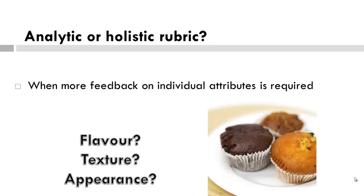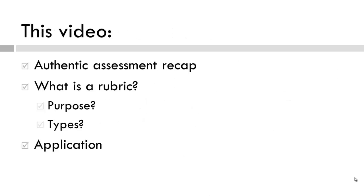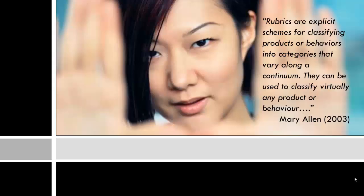For example, if you are analyzing muffins with a rubric that might examine flavor, texture, and appearance, an analytic rubric might provide descriptions of each of these attributes, thereby providing more feedback on each item. Take a moment to pause and consider the questions we will discuss in the tutorial. Our next video will examine more deeply why a holistic or analytic rubric might be used. Thanks for watching.